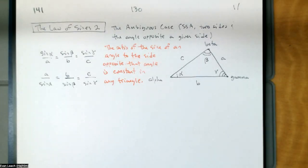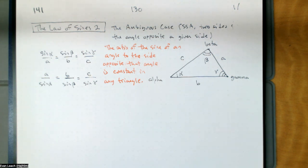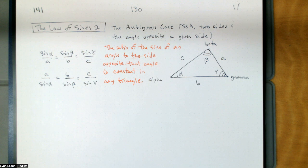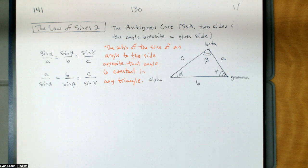Today we want to look more at the law of sines, which says that the ratio of the sine of an angle to the side opposite that angle is constant in any triangle. Sine alpha over A equals sine beta over B equals sine gamma over C. Alternatively, we put the sides on top: A over sine alpha equals B over sine beta equals C over sine gamma.